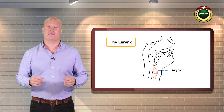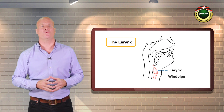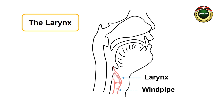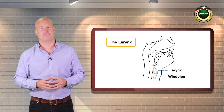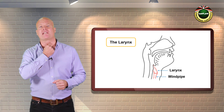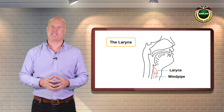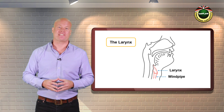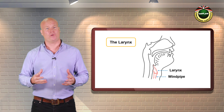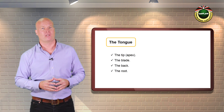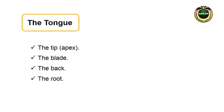The pharynx lies between the uvula and the larynx, as shown in the diagram. At the top of the windpipe lies a muscular structure known as the larynx, also known as the Adam's apple. It is an important speech organ as it contains the vocal cords and the glottis.